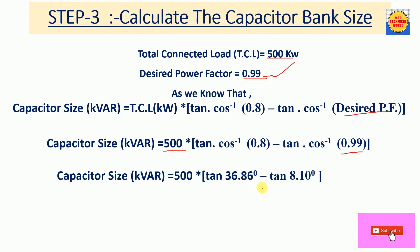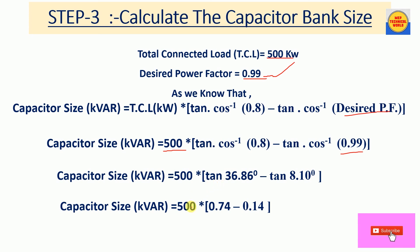After calculation, cos⁻¹ of 0.8 equals 36.86 degrees, and cos⁻¹ of 0.99 equals 8.10 degrees. So we now calculate tan(36.86°) and tan(8.10°) to continue the formula.